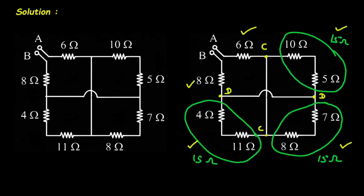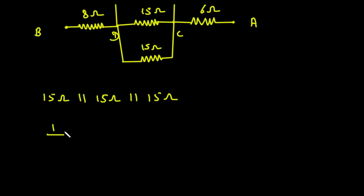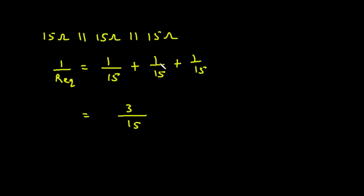Now we can easily simplify this network. The three 15 ohm resistances are all connected in parallel. So we can write: 15 ohm parallel with 15 ohm parallel with 15 ohm. Therefore 1/Req = 1/15 + 1/15 + 1/15 = 3/15. Therefore Req = 15/3 = 5 ohm.